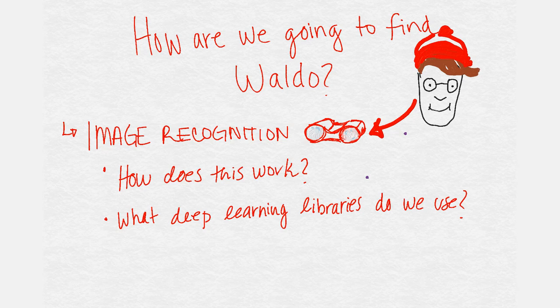So we're going to be using the power of image recognition. I'm going to be explaining how this works and then what deep learning libraries and techniques we might use to achieve an end goal where we input an image and our neural network labels where Waldo is within the image.